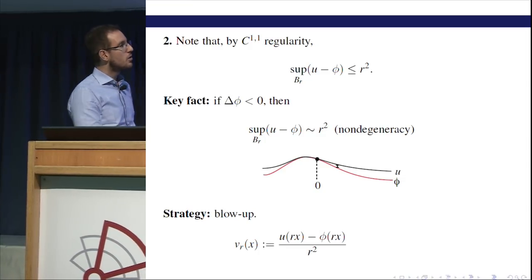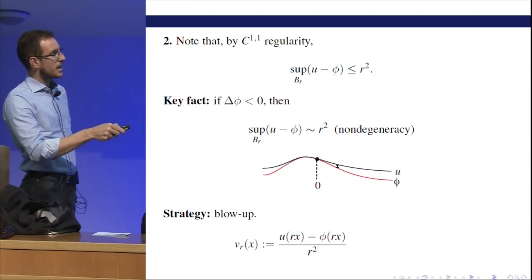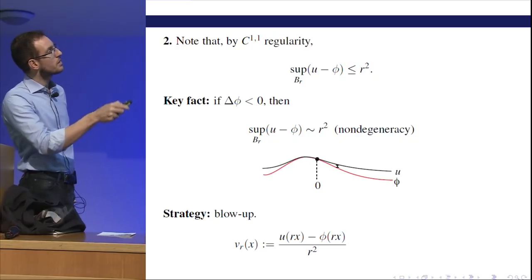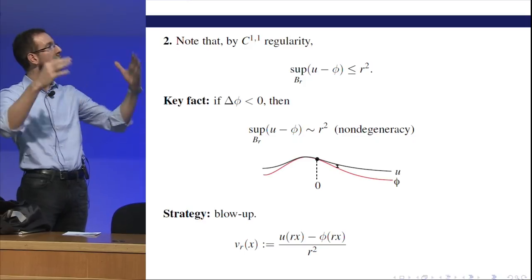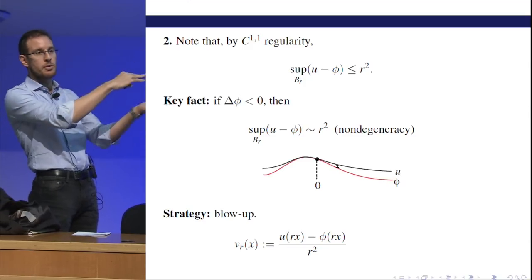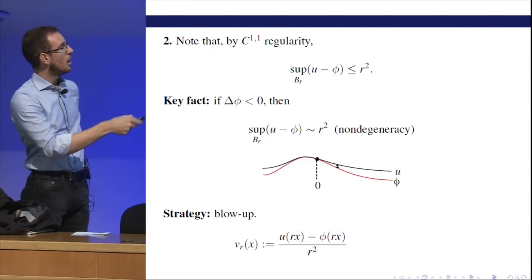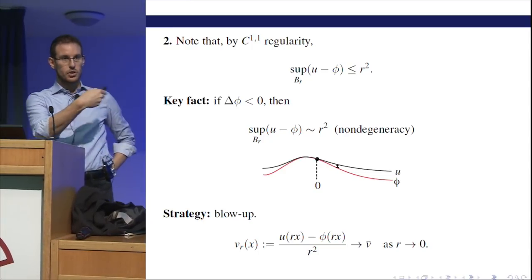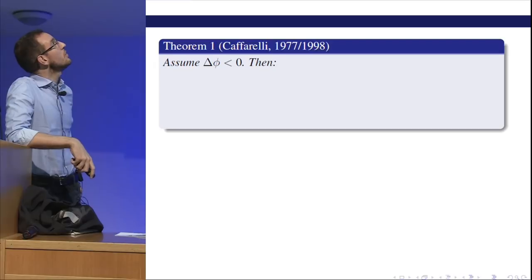What is blow-up? You take your function, subtract the obstacle, and rescale like R squared. You consider this function V_R. Because of the non-degeneracy property, this function is of size one in B_1 — bounded from above and below in every ball of fixed radius. Then you take a limit and ask: can I classify these limits? The blow-up strategy is to try to understand what happens when you rescale your solution.